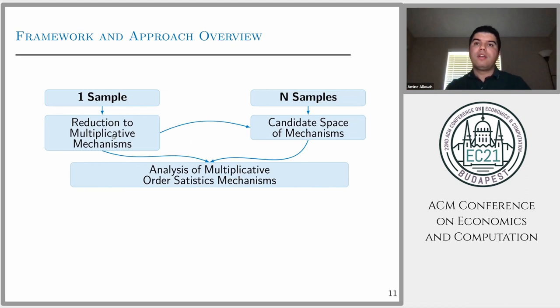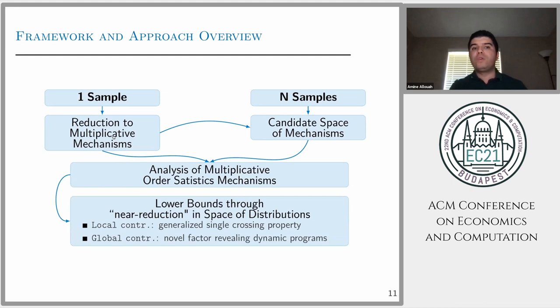The way we generalize this is by looking at order statistics of the sample. One example is we take the median and multiply it by, say, 0.8 or 0.7, and post that as a price for the next buyer. This solves the first challenge: identify the class of mechanisms. However, there is still a challenge of how to identify the performance against this class of mechanisms. For that, we do it through two steps.